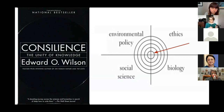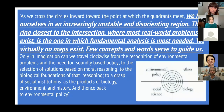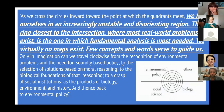When you get to that place, that is the place of consilience. Wilson says as we cross the circles inward toward that inner point, we find ourselves in an increasingly unstable and disoriented region. The ring closest to the intersection where most real-world problems exist is the one where fundamental analysis is most needed, yet virtually no maps exist. Few concepts and words serve to guide us. Wilson wrote this in 1999, and now it's 2021 — so there have certainly been more maps created and more concepts laid forth to guide us in these convergent spaces.